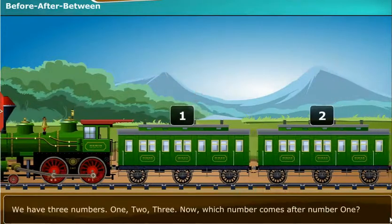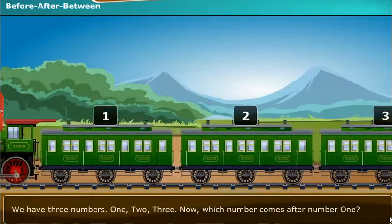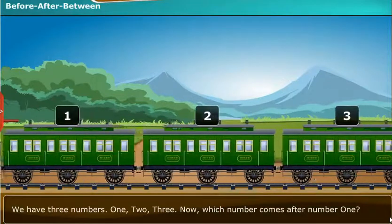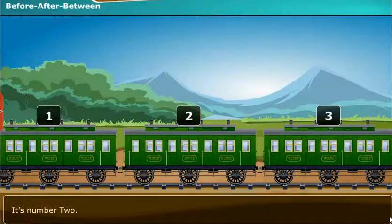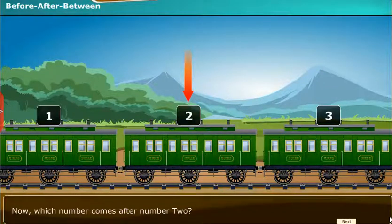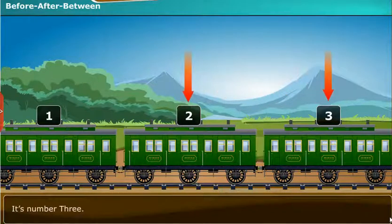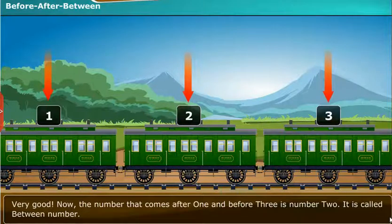We have 3 numbers: 1, 2, 3. Which number comes after number 1? It is number 2. Which number comes after number 2? It is number 3. Very good. The number that comes after 1 and before 3 is number 2. It is called the between number.